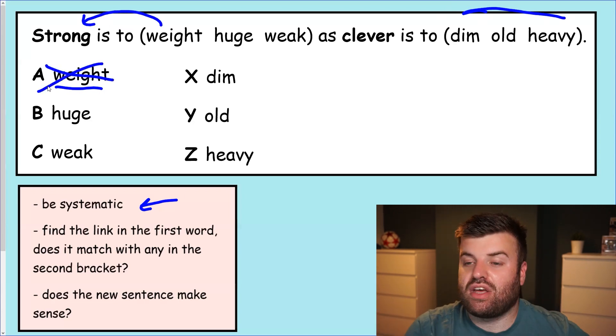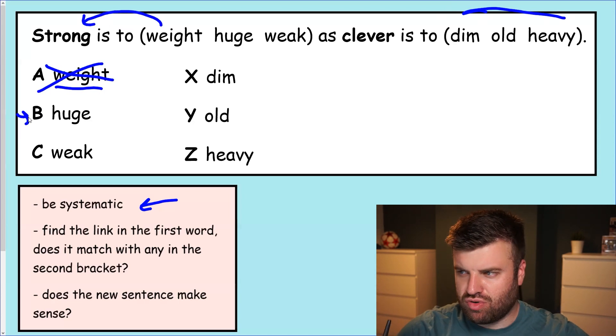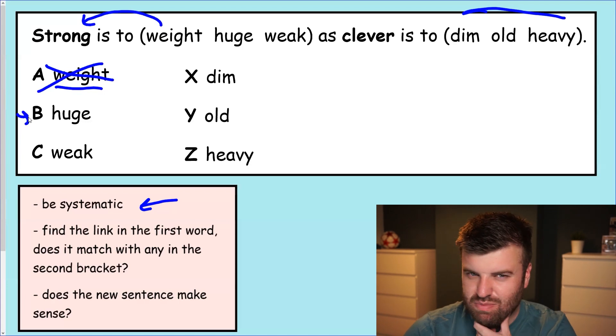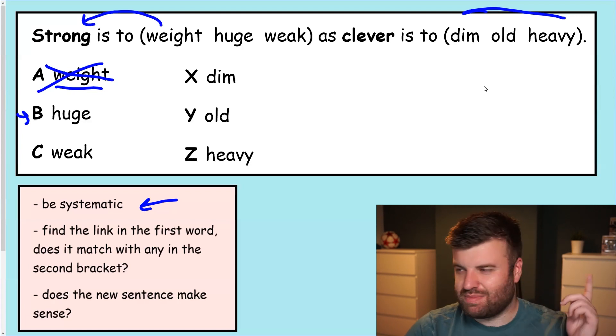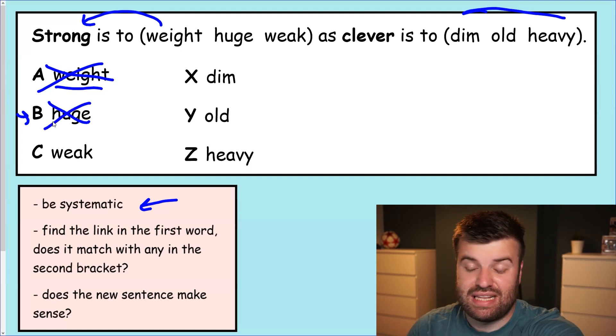Let's be systematic and go to huge. Strong and huge. I guess some people who are very strong get huge muscles and they get bigger. Okay, a bit of a weak link there. I don't think it's going to be B but we'll check anyway. Clever is to dim. People who are clever are dim. That doesn't make any sense. People who are clever are old. There's no link there with age. People who are clever are heavy. That just is absolute nonsense. So actually B, using our systematic way and the second hint at the bottom there which is to check how the words go together, it can't be that.